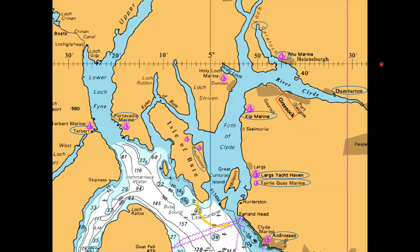I'm going to do this by looking at the bigger picture. This is a scaled version of the Clyde showing some but not all of the secondary ports. We've got Kip Marina, Largs, Fairley, Ardrossen, Rossi, Tarbot, Portavadi, just to name a few. We've got our standard port for the Clyde here in Greenock. All the secondary ports are linked to a standard port, either with corrections plus or minus minutes or hours in some cases from that standard port.